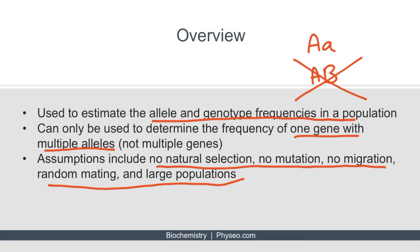No natural selection refers to the idea that there cannot be a selection pressure that makes one of the alleles less viable. No mutation means that one of the alleles isn't able to turn into a different allele. No migration refers to the idea that you can't have a lot of people with big A's leaving or coming into the population. Random mating refers to the idea that people won't be more likely to mate with other people who have large A's than small A's.